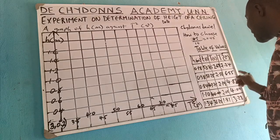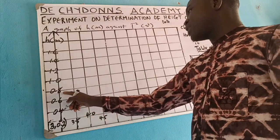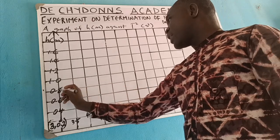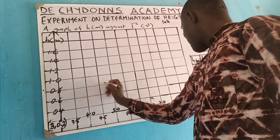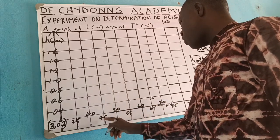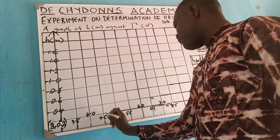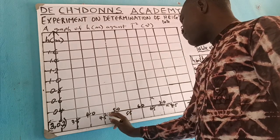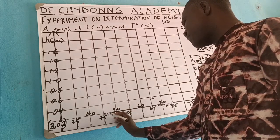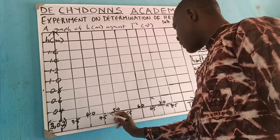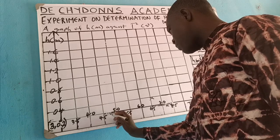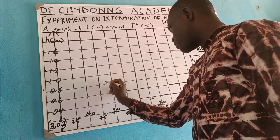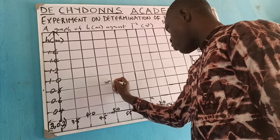For the third point, H = 0.84 against T squared = 4.8. Locate 4.8 on the horizontal axis by counting from 4.5: each box is 0.05, so count 6 boxes to reach 4.8. H = 0.84 is between 0.8 and 0.9 on the vertical axis. Plot the point at this intersection.